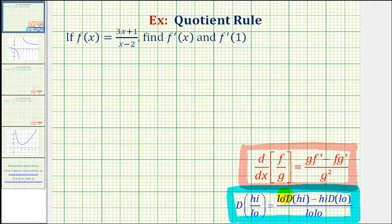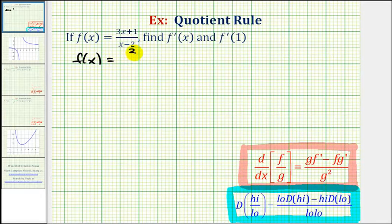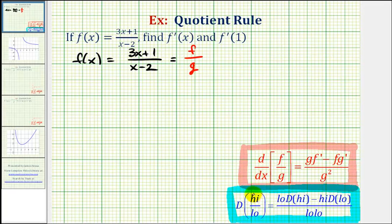Again, we have the denominator, or the low function, times the derivative of the high function of the numerator, minus the high function or the numerator, times the derivative of the low function, all divided by low low, which is the denominator squared. Looking at our given function, f of x equals the quantity three x plus one divided by the quantity x minus two. Using the formal quotient rule, we'd let the numerator be equal to f and the denominator be equal to g — or equivalently, the numerator would be high and the denominator would be low.